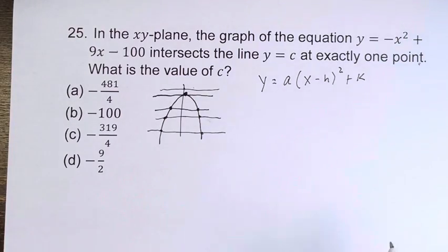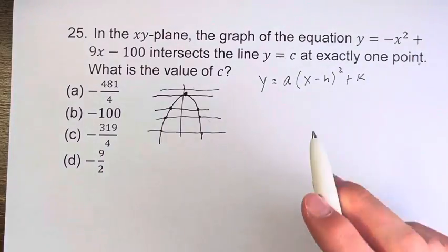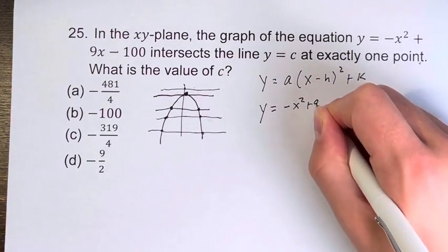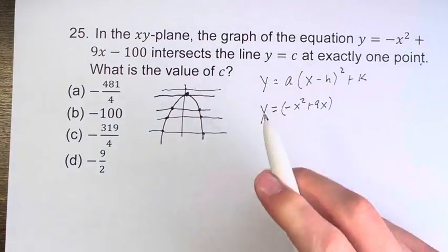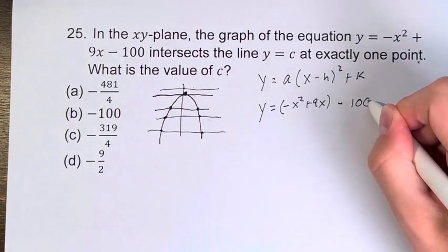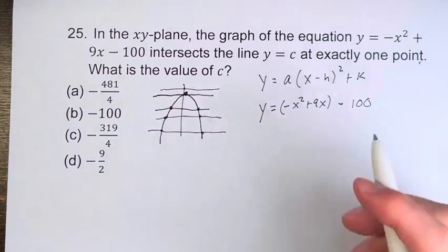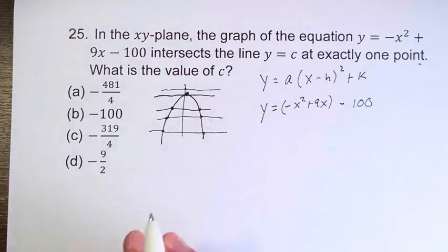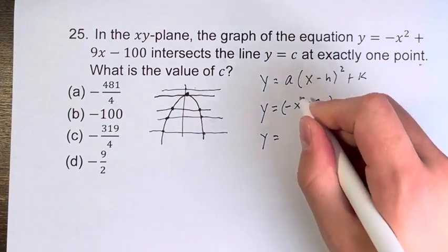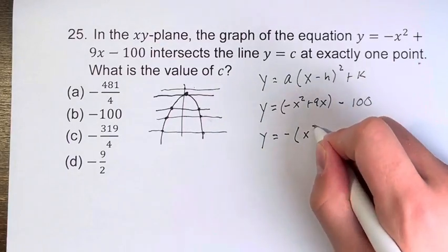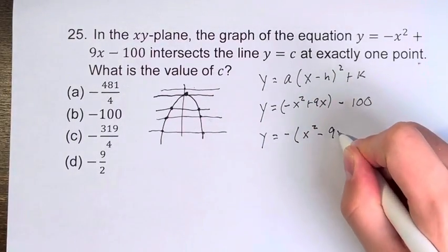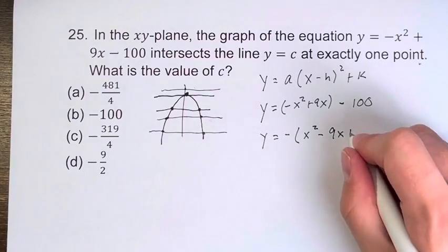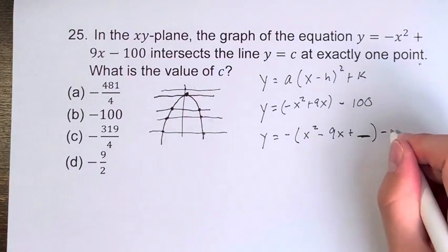We can first split up the x terms and the constant. So y equals negative x squared plus 9x — these go into the squared term — minus 100, which goes separately. The value of a is just the coefficient of the x squared term. In this case, it's negative 1. So we get negative times (x squared minus 9x). Then we want to complete the square — add a certain value inside — and don't forget the minus 100. Since we're adding inside and there's a negative out front, we have to add it back at the end.